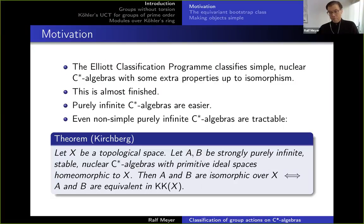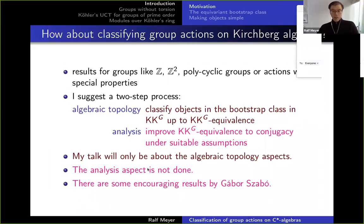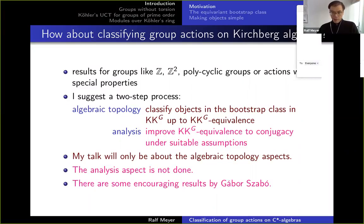Rather than the non-simple generalization of purely infinite C*-algebras, I want to look at a different way of making things more complicated, namely putting a group action on a C*-algebra. This has been done in the world of von Neumann algebras and also played a role in the classification of amenable von Neumann algebras. There are some encouraging results for special groups like Z² and more recently the Japanese school has a program to treat polycyclic groups, and there are also very good results for actions with the Rokhlin property.